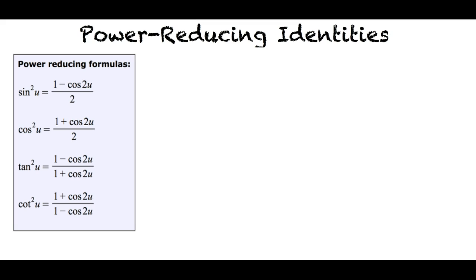And lastly, cotangent squared u equals 1 plus cosine 2u all over 1 minus cosine 2u. So if we are given sine squared u, then we can simplify it to 1 minus cosine 2u over 2. Correct. Let's do an example.